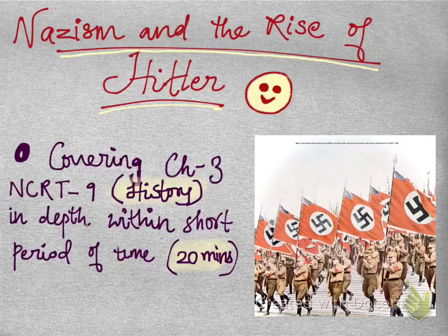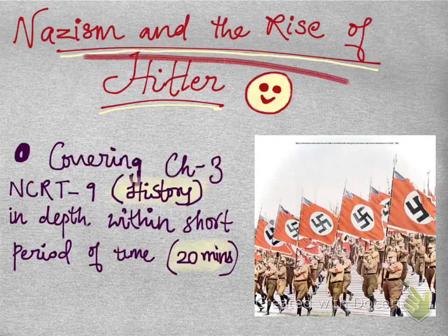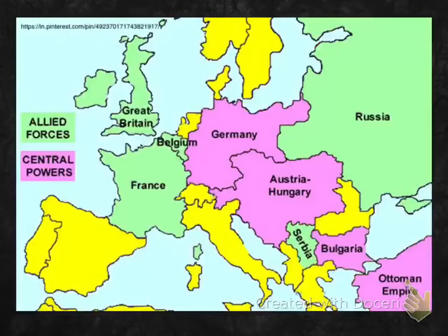Hello friends, we are going to start with NCERT Class 9 History Chapter 3, that is Nazism and the Rise of Hitler. This is a very interesting chapter if you learn it in a story format. So without any delay, let's start the chapter.